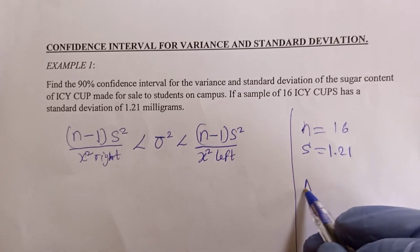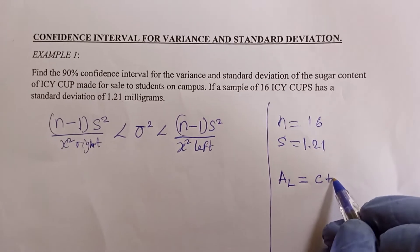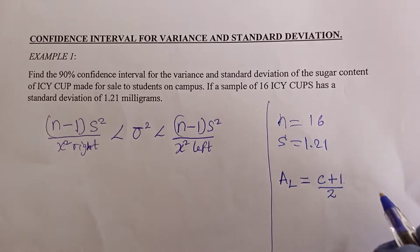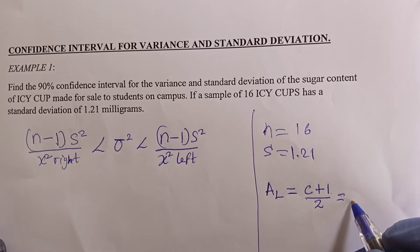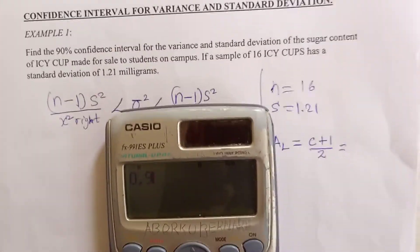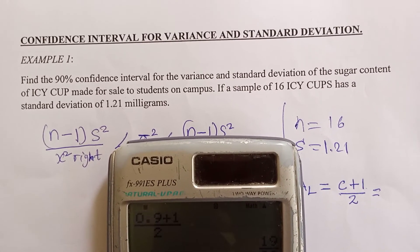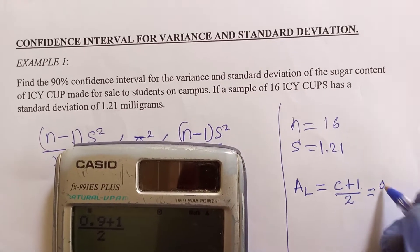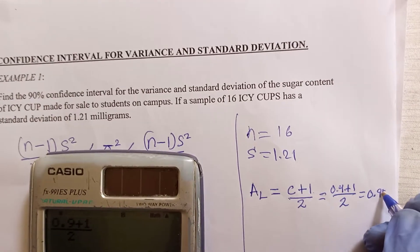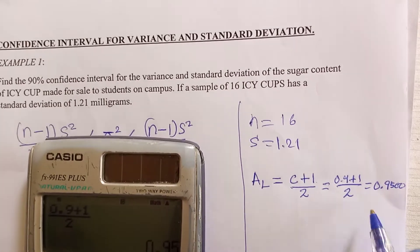To find these, you first find the area to the left using the formula: (C plus 1) divided by 2. Here C is 90%, which is 0.9. So 0.9 plus 1, divided by 2, gives us 0.95, or 0.9500 in four decimal places.